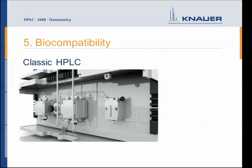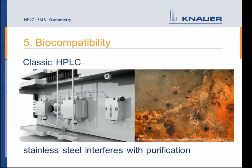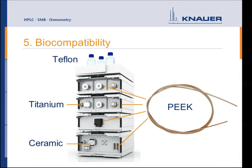Another point is biocompatibility. In classical HPLC, we work with a stainless steel system and solvents. In FPLC, we mainly work with proteins and salt-containing buffers. If you mix stainless steel with salt buffers over a long time, you may get corrosion — and stainless steel can also interfere with protein purification. That is why FPLC uses biocompatible or bioinert systems, mainly with PEEK capillaries. A typical biocompatible system has PEEK capillaries, ceramic or titanium pump heads, and Teflon buffer tubing.